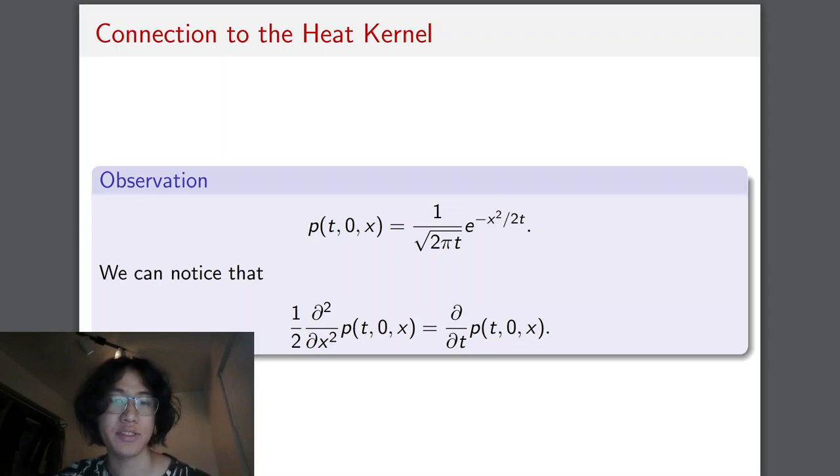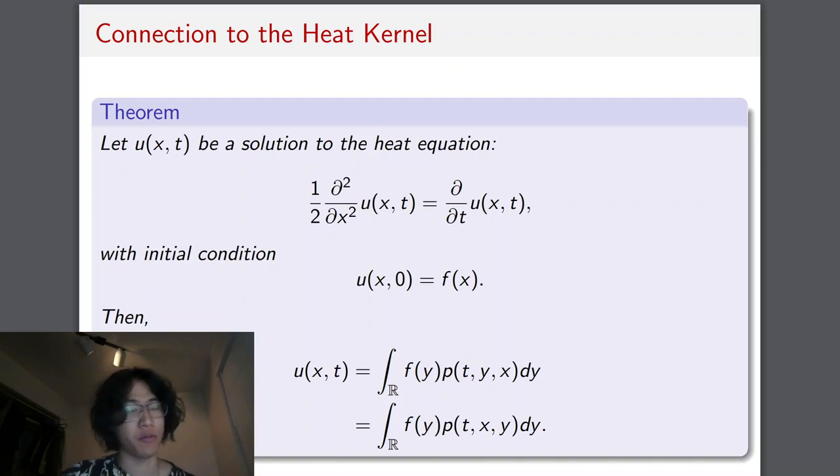So Brownian motion on metric graphs has a connection to the heat kernel. We can observe that this transition density from zero to x is actually a solution to the heat equation. So we can formulate this as the transition density being equivalent to the kernel of the solution to the heat equation with initial condition equal to f.